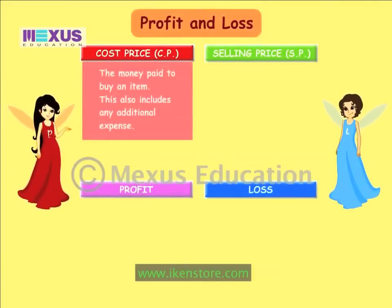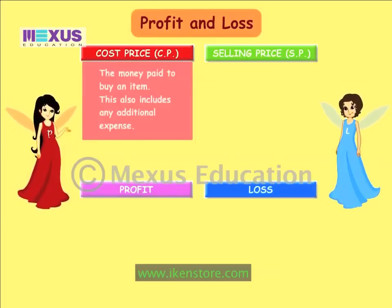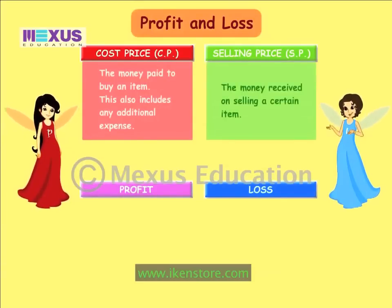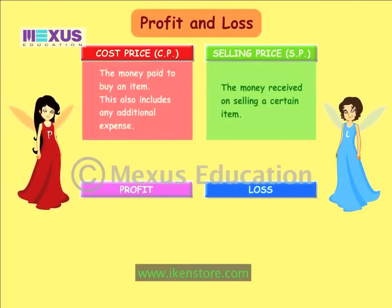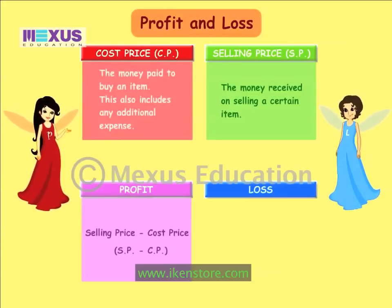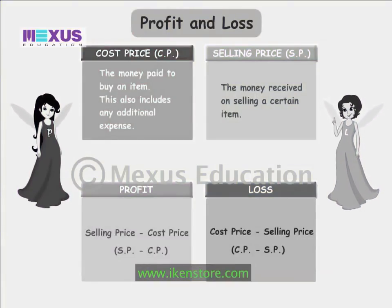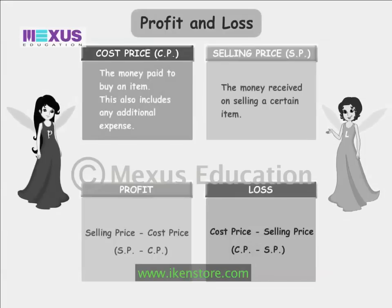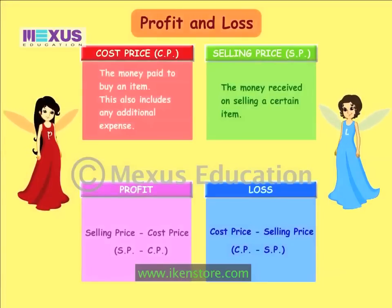Cost price is the money that the shopkeeper spends on buying a certain item. The cost price also includes additional expenses on transport, labor, and maintenance as well. Selling price is the money that the shopkeeper receives on selling a certain item. Profit is the difference, or the amount of money left, on subtracting the cost price from the selling price. To make a profit, the selling price should always be higher. Loss is the difference, or the amount of money left, on subtracting the selling price from the cost price. In a loss, the cost price is always higher.